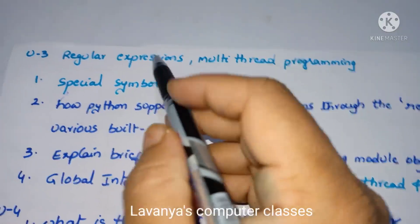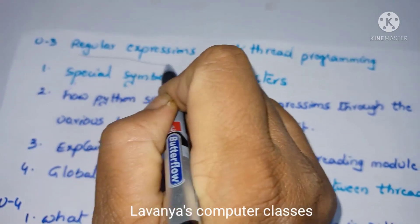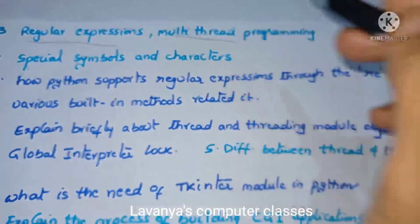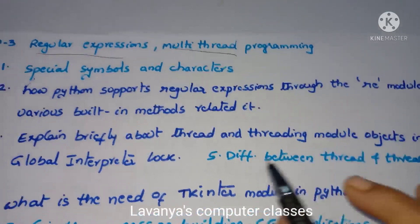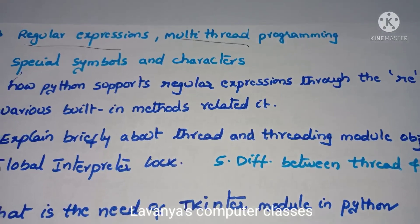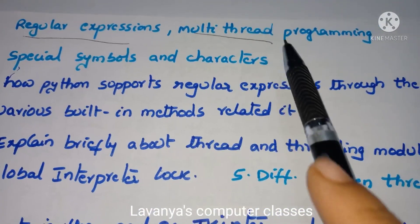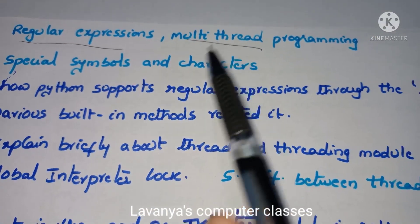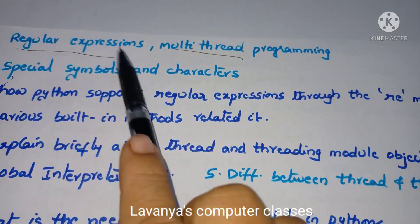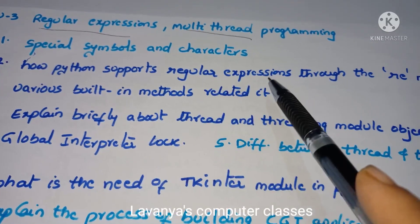In Unit 3, there are two chapters: regular expressions and multi-threading. The first important question is: explain the special symbols and characters in regular expressions — what type of symbols and characters are used. The second question is: how does Python support regular expressions through the re module?